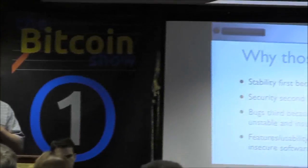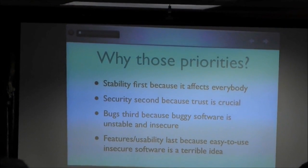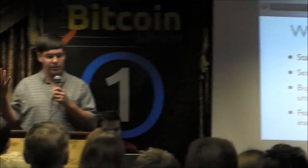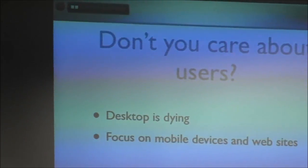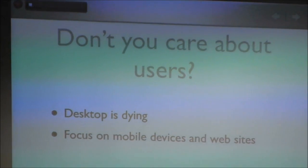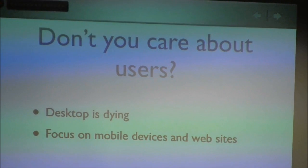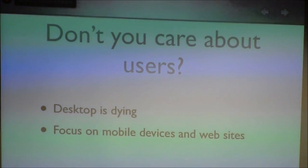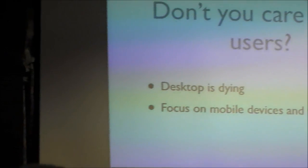Bugs I put third because buggy software is usually unstable and insecure, so fixing bugs is extremely high priority. Features and usability are really last because easy-to-use but insecure software is a really bad idea. I think part of what we've seen over the last few months is maybe people spending too much time making software easy to use and not enough time making sure it's really secure on the back end.